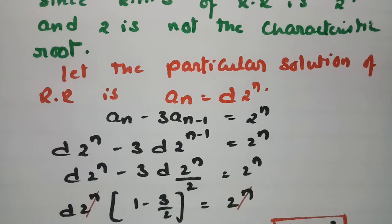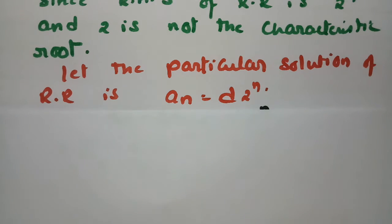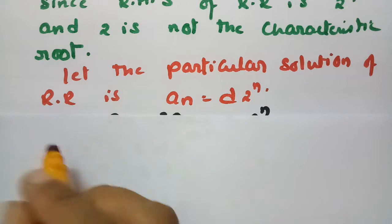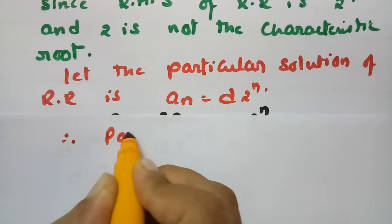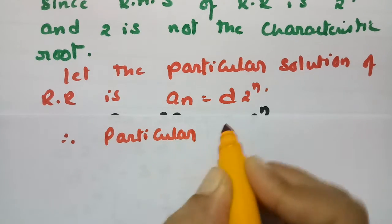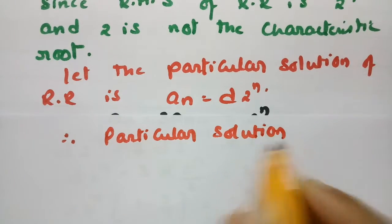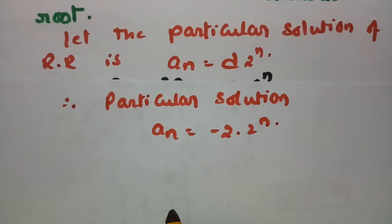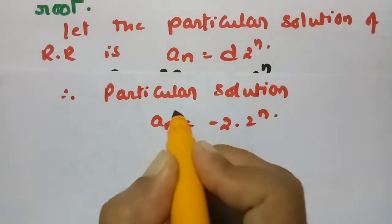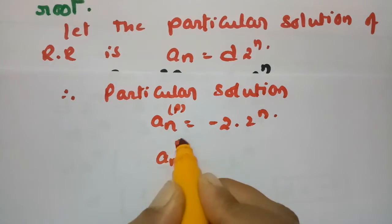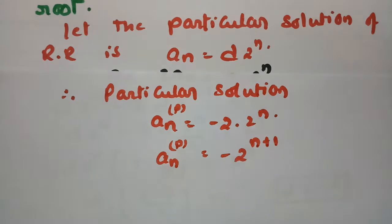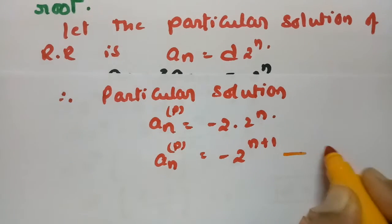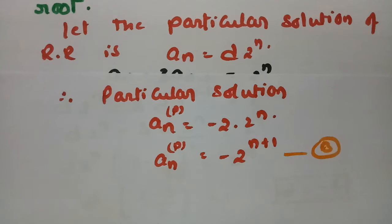We got the value of d = -2. Substituting d = -2, the particular solution is a_n(p) = -2·2^n = -2^{n+1}.